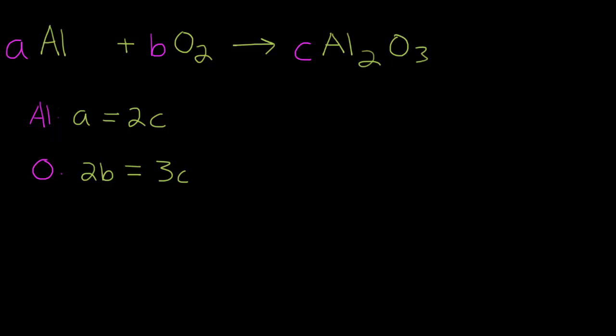So we have two equations and two unknowns, so we should be able to solve this. So we're going to start by setting one of the variables equal to 1. It doesn't matter which one you choose, so we'll just choose A for this example. So A equals 1. And now we're going to use the aluminum equation to solve for C. So we have 2C equals A. If A is 1 then 2C equals 1. We'll divide both sides by 2, so C equals 1 divided by 2.